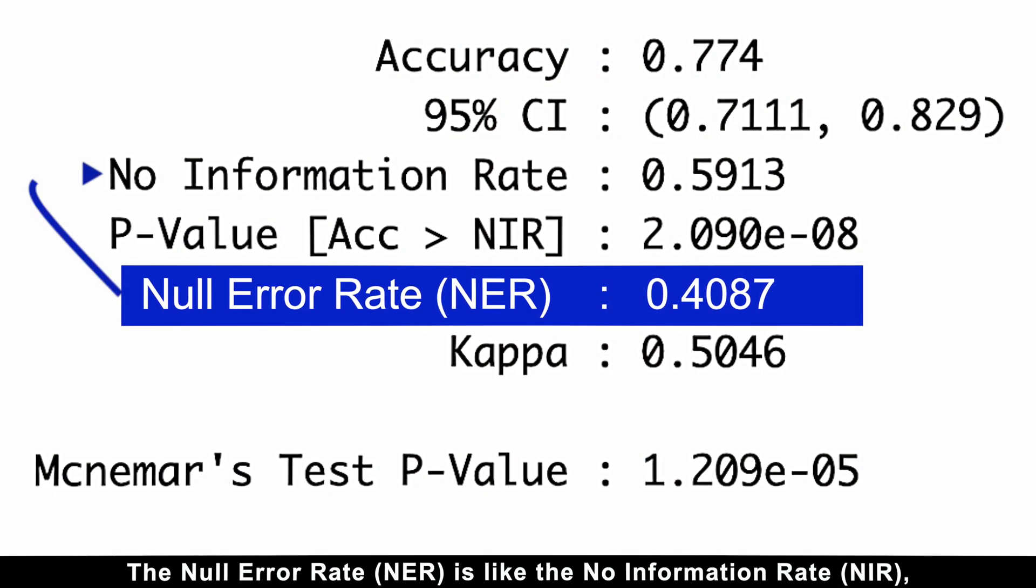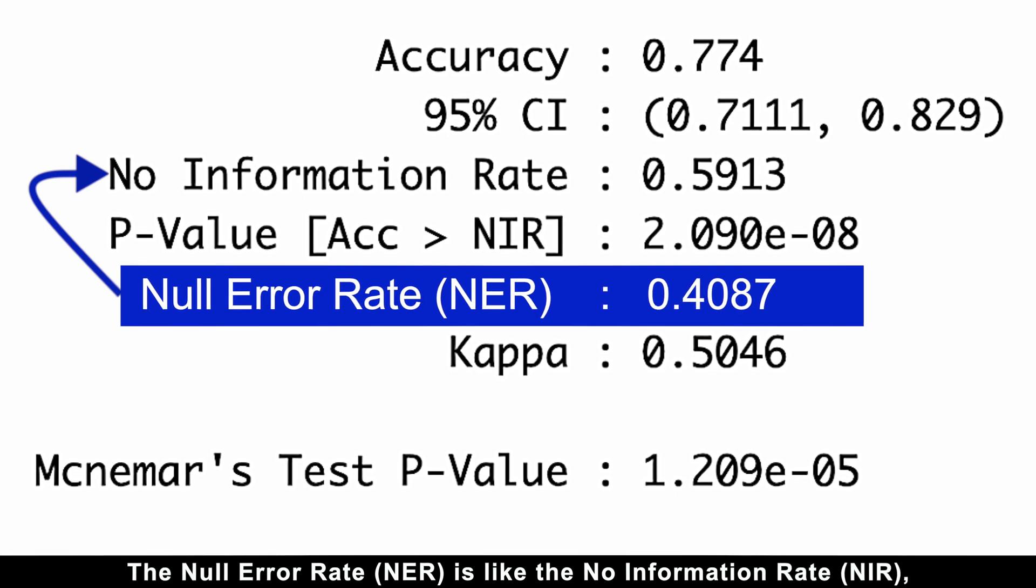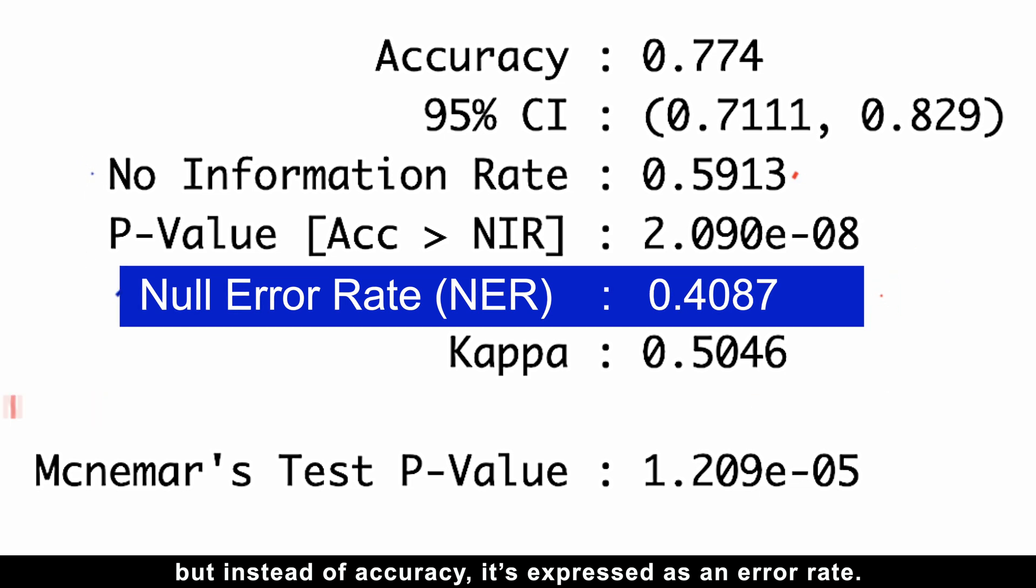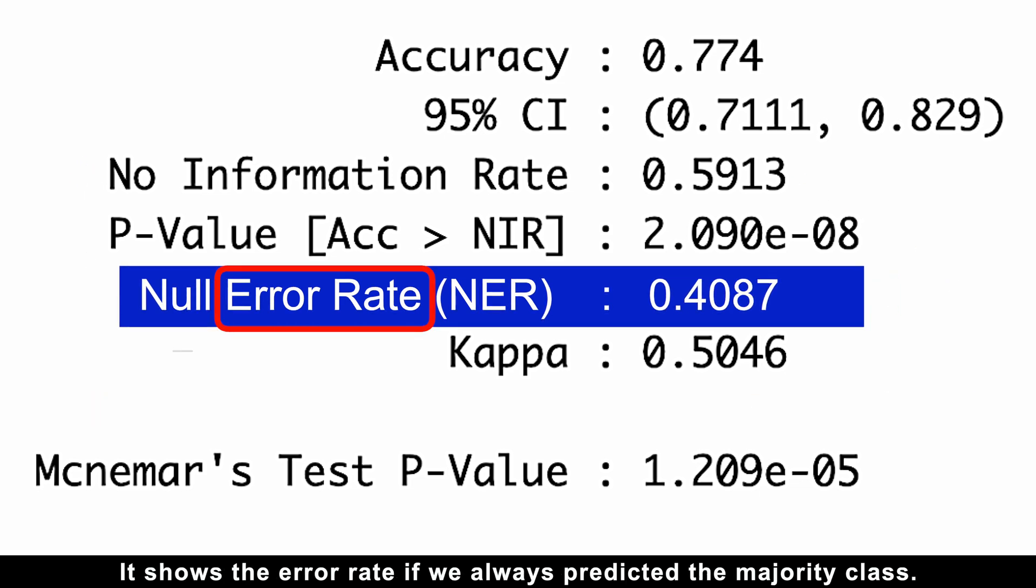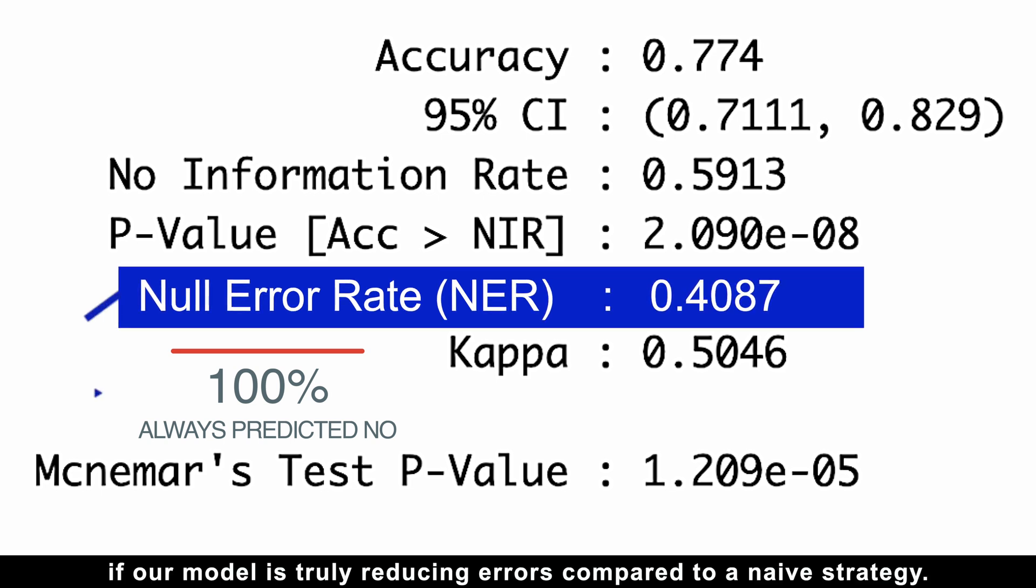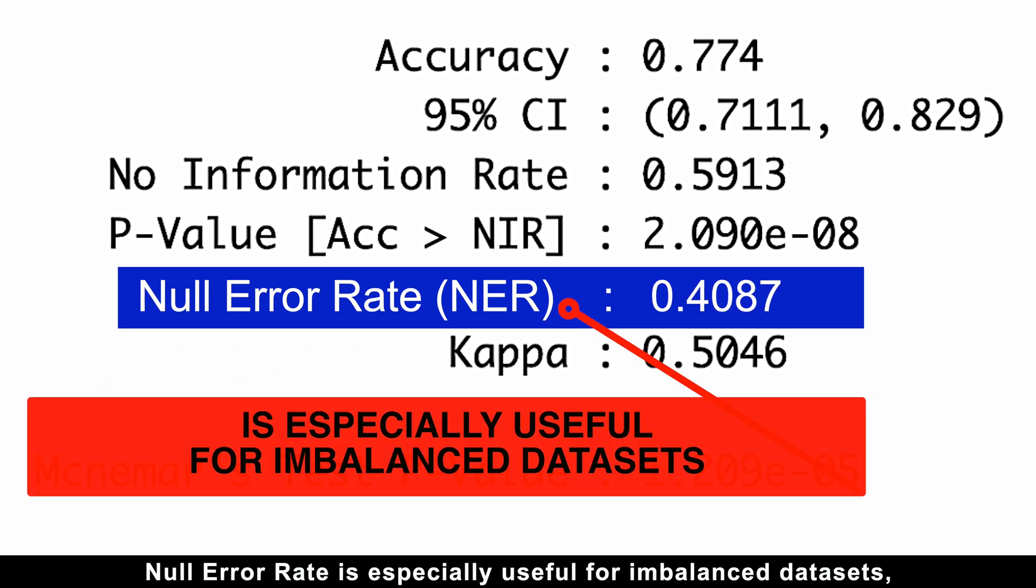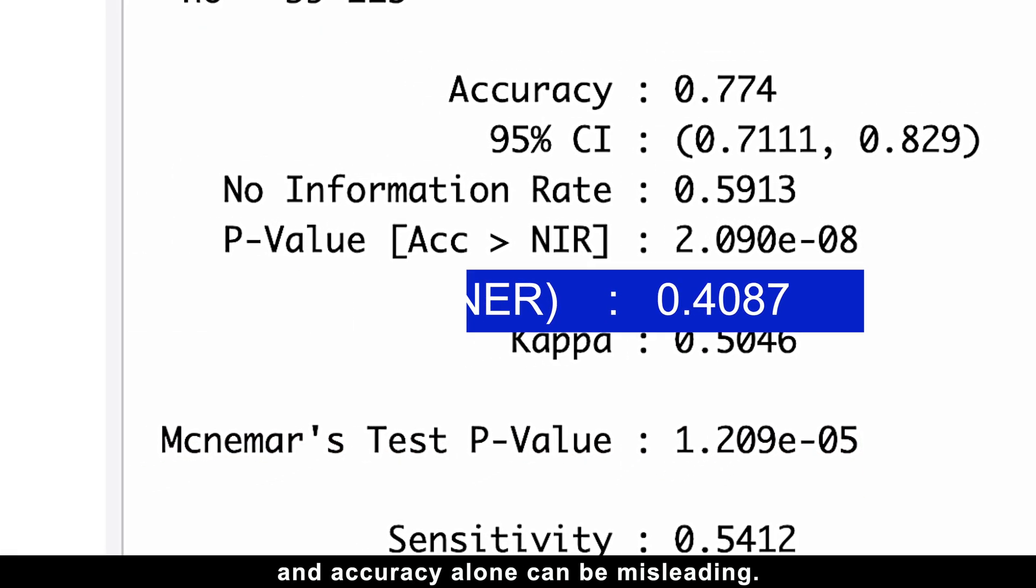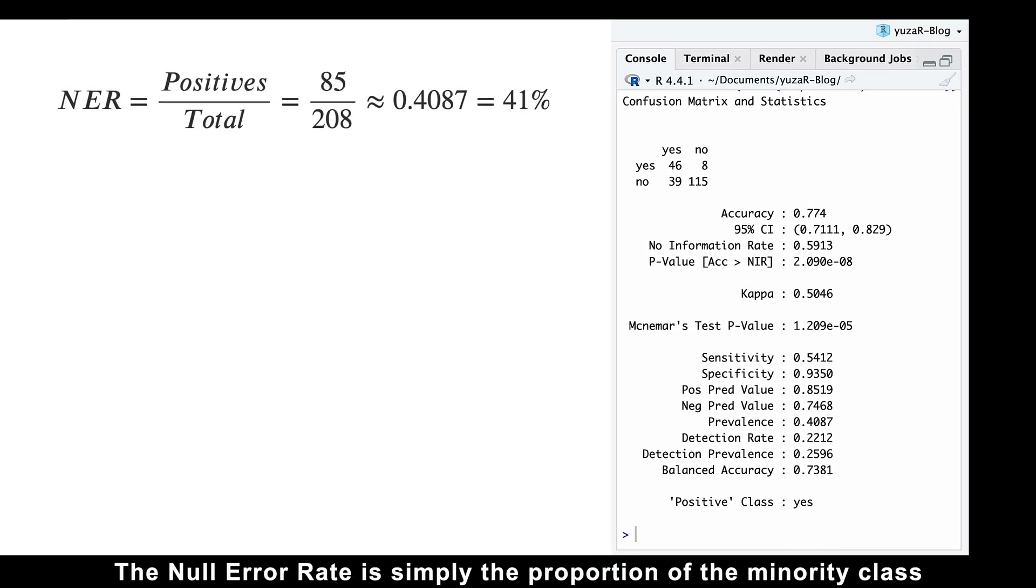The null error rate is like the no information rate, but instead of accuracy, it's expressed as an error rate. It shows the error rate if we always predicted the majority class. This gives us a baseline to see if our model is truly reducing errors compared to a naive strategy. Null error rate is especially useful for imbalanced datasets, where the majority class dominates, and accuracy alone can be misleading.